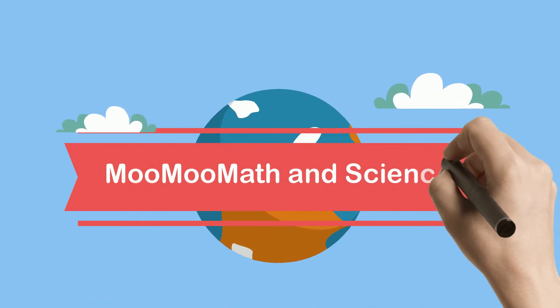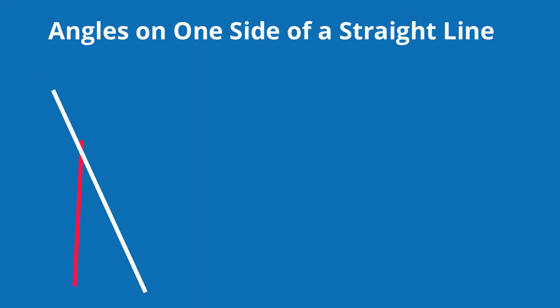Welcome to Moo Moo Math and Science and the Angles of a Straight Line. The angles on one side of a straight line always add up to 180 degrees.